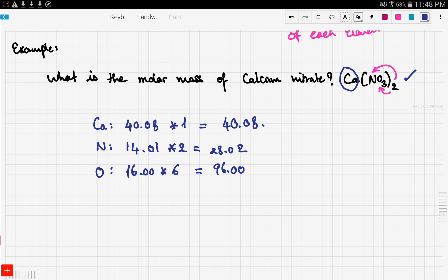Now we said that the molar mass of a compound is the sum of individual molar masses of the elements. So we add those up and we get 164.1 gram per mole. And gram per mole is the unit for the molar mass.